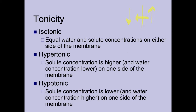If we have a hypotonic concentration, that's where the concentration is lower on one side of the membrane than the other. In this example, the right side is hypertonic and the left side is hypotonic. They both start with 'hyper' and 'hypo' — just remember hyper means high and hypo means low.